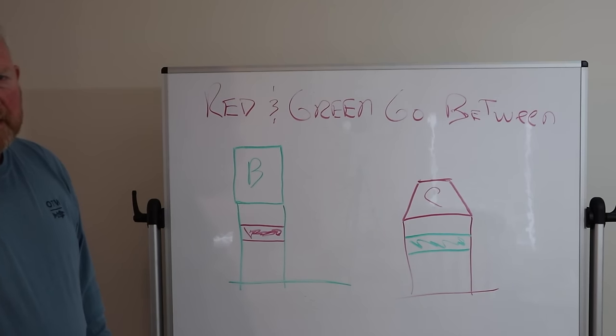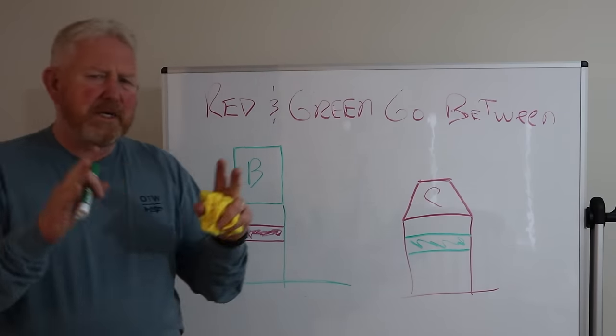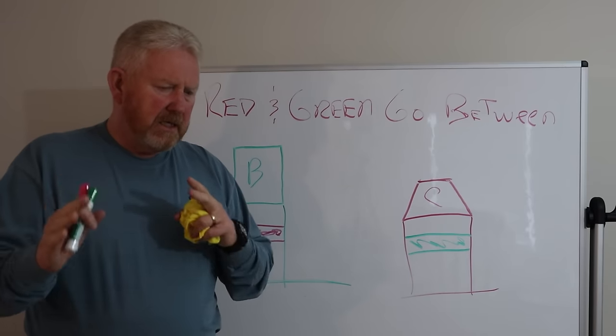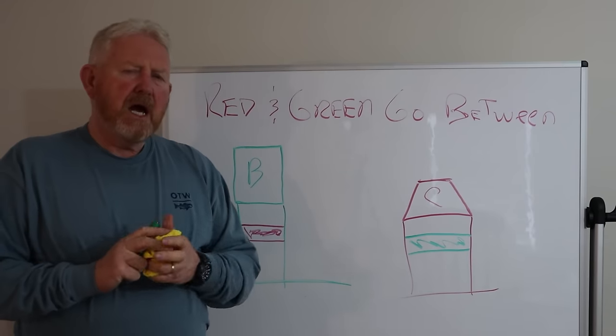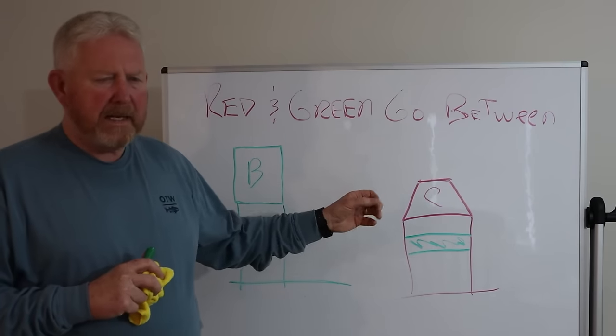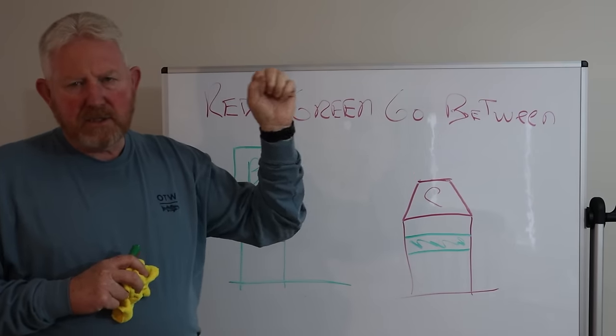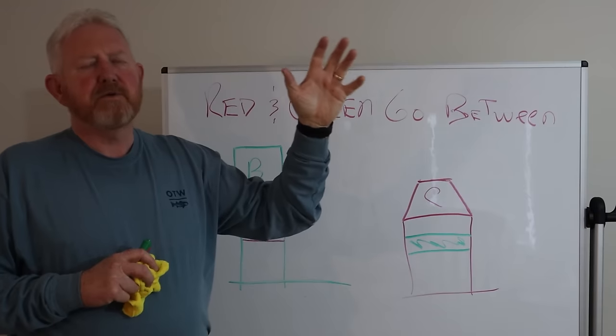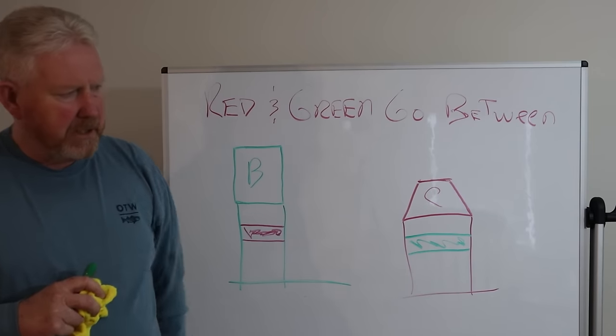Next is lights. I could do an entire video on lights, but we're going to do the reader's digest version on this. When you have a red light on a buoy, it's just blinking. Hey, I'm over here. I'm a red buoy. If you're returning from sea, take me down your right side.